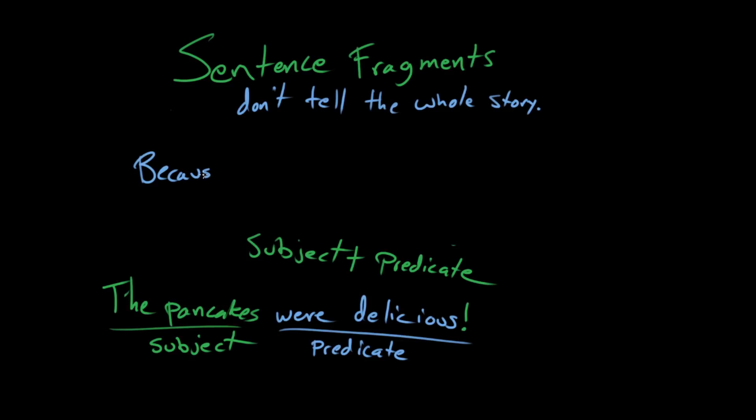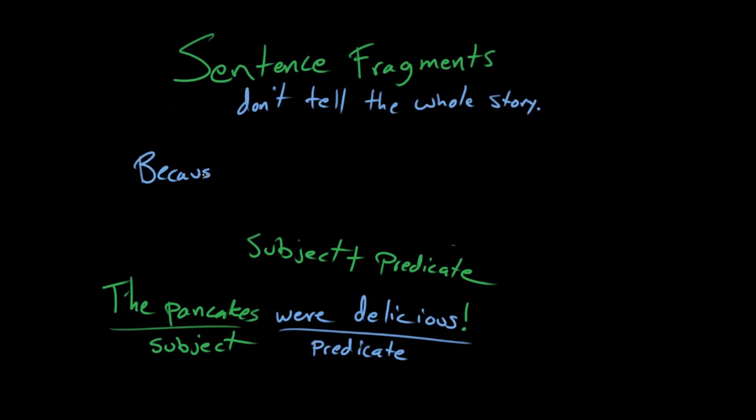Let's look at another example. What about "because of the snowstorm"? Is that a sentence, Beth? Nope. Why not? Well, you don't tell what happened because of that snowstorm. It's not even a dependent clause — this thing doesn't really have a subject or a verb. It's really just a prepositional phrase. So "because of the snowstorm" something could happen, but we don't know what that is. So "because of the snowstorm, we stayed home from school."